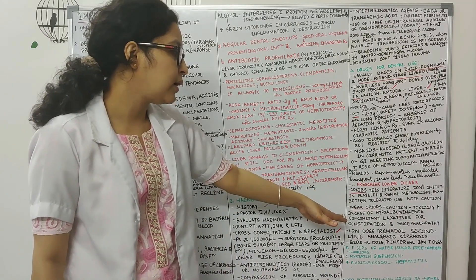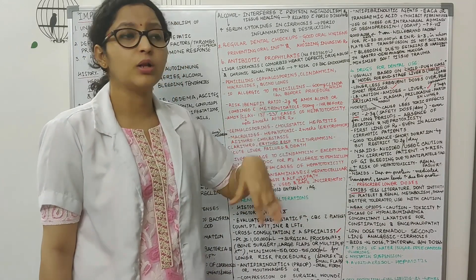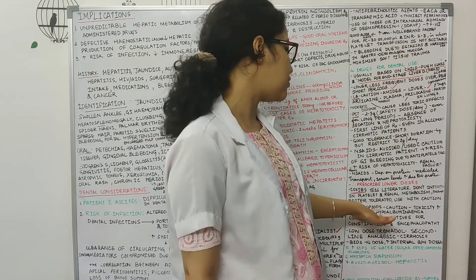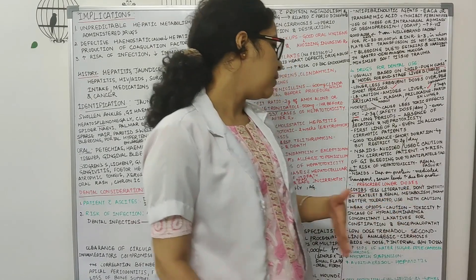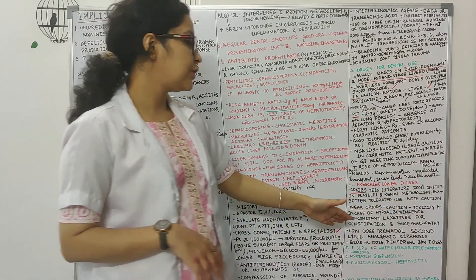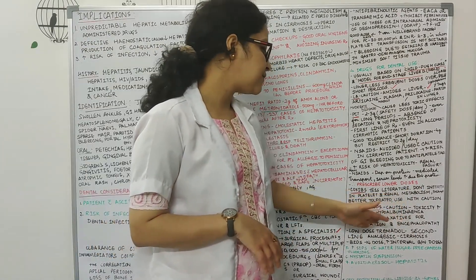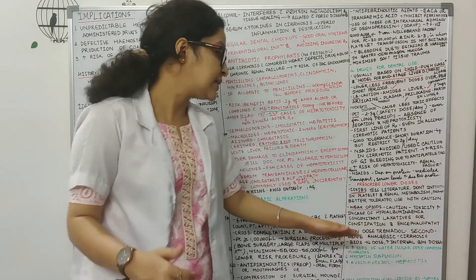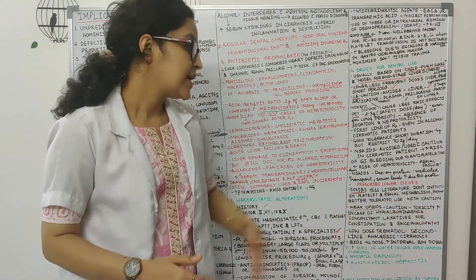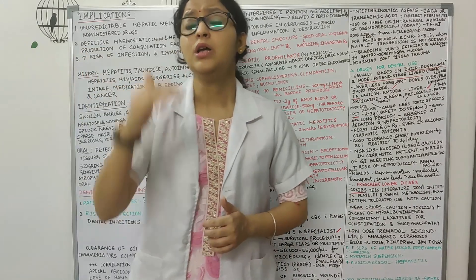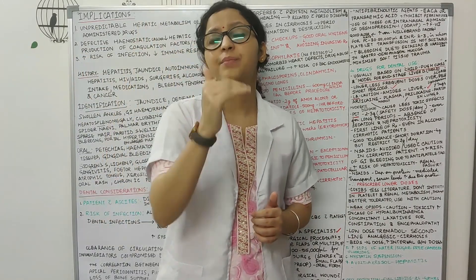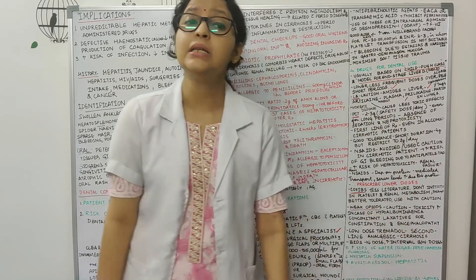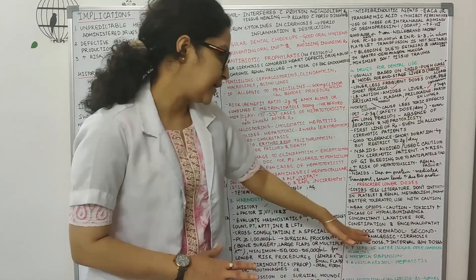Coming to weak opioids, they have to be used with caution. Toxicity increases in cases of hypoalbuminemia, and you should give laxatives for constipation and encephalopathy, which are side effects of these drugs. After paracetamol, low-dose tramadol can be given as the second line of analgesic in cirrhotic patients.